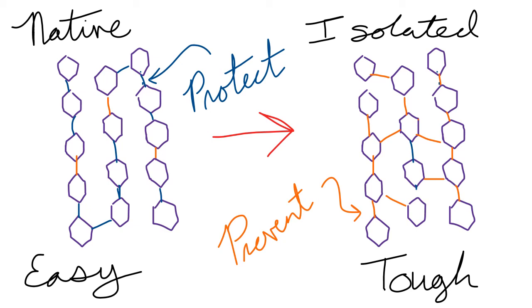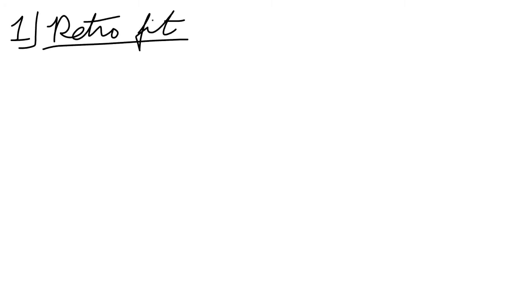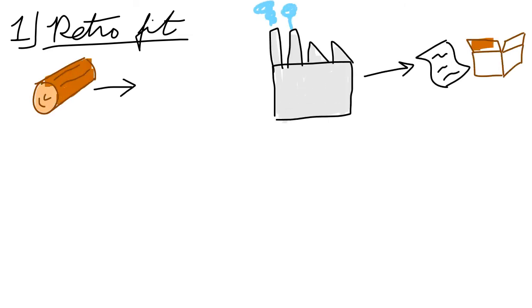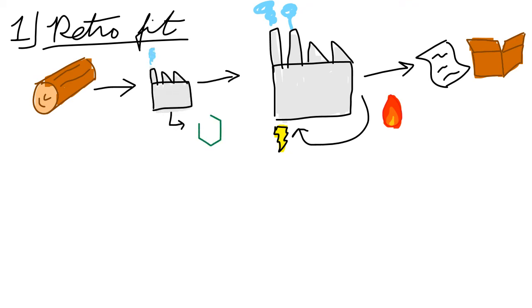Of course, any process that can do these also has to be economical. This brings us to the second challenge of making chemicals from lignin: implementing the process on an industrial scale. The first way is to retrofit the existing industry. Nearly all current industrial biomass processing follows the model described earlier, where cellulose is the primary product and the lignin produced cannot be used to make chemicals. So a second process would need to be added at the front end that could produce usable lignin without damaging the cellulose.